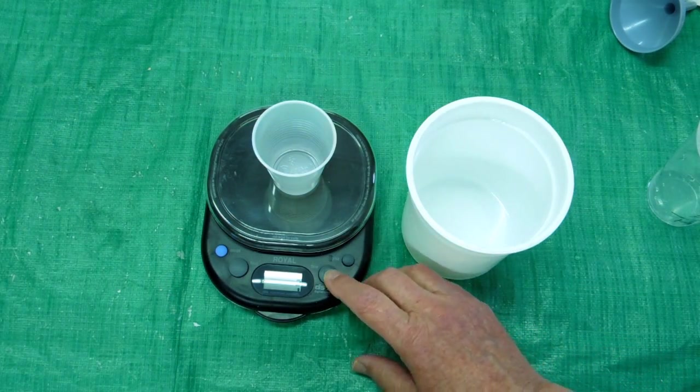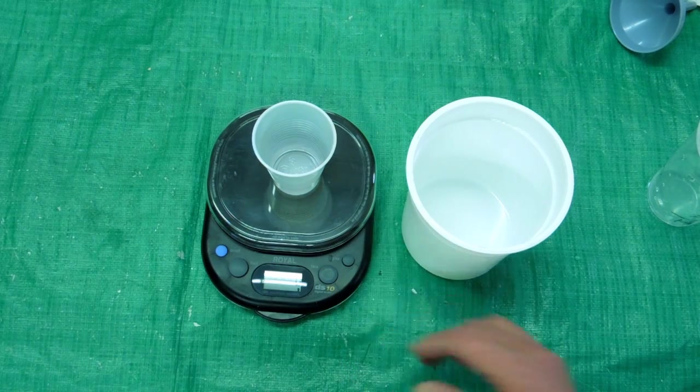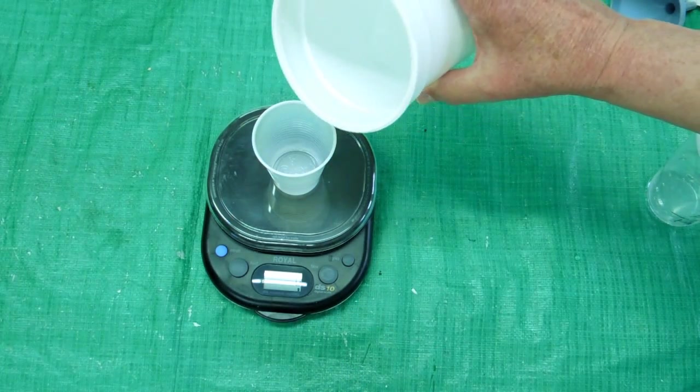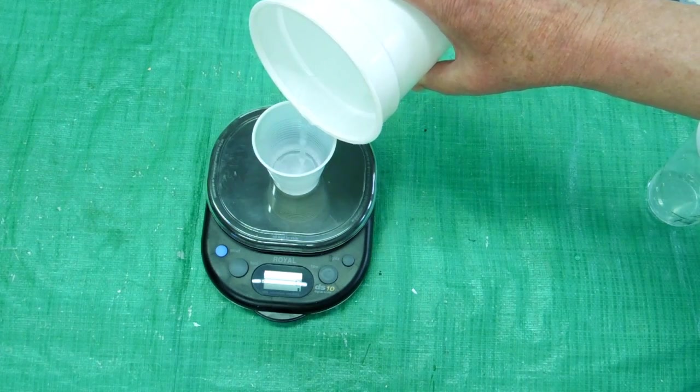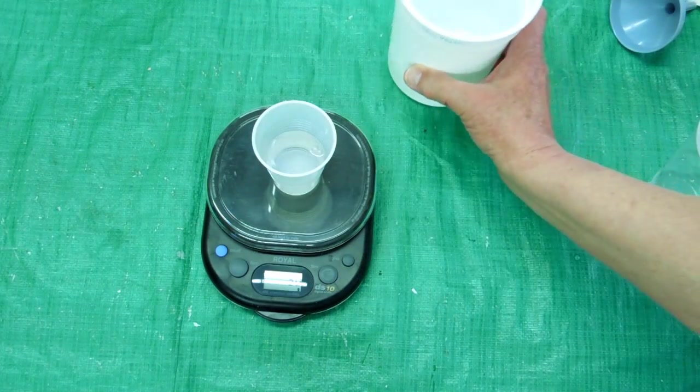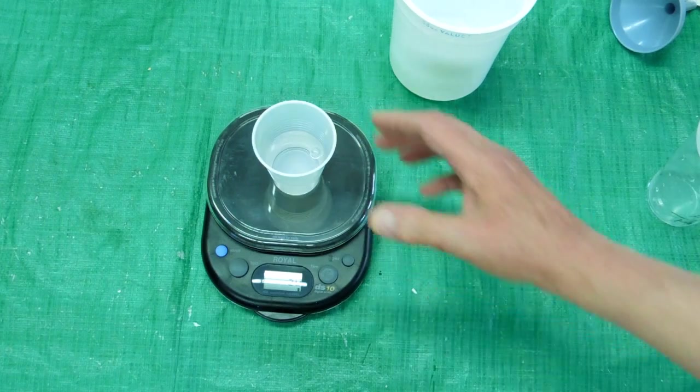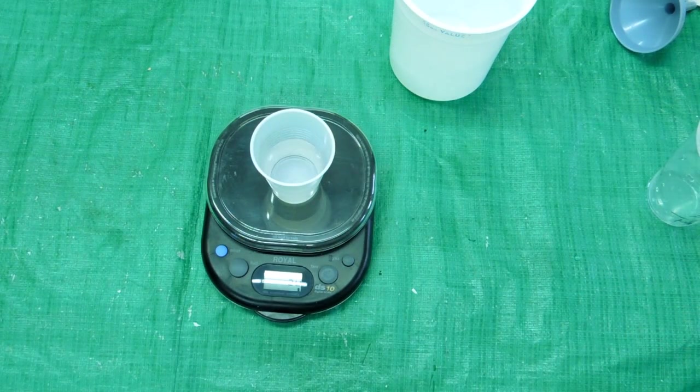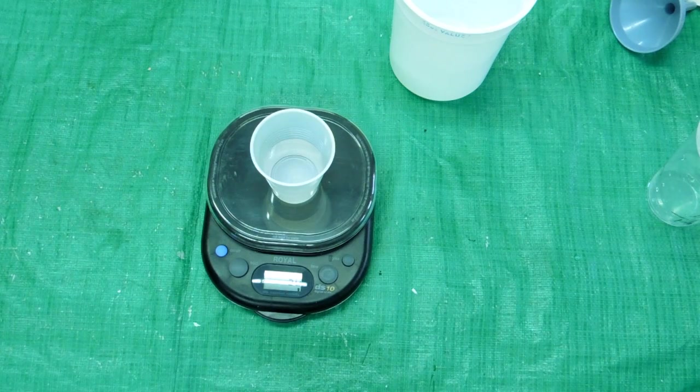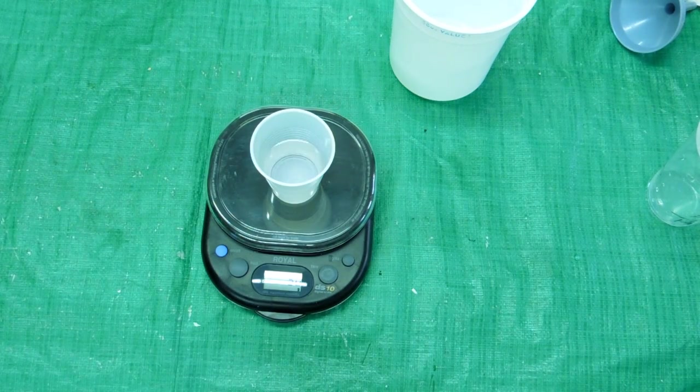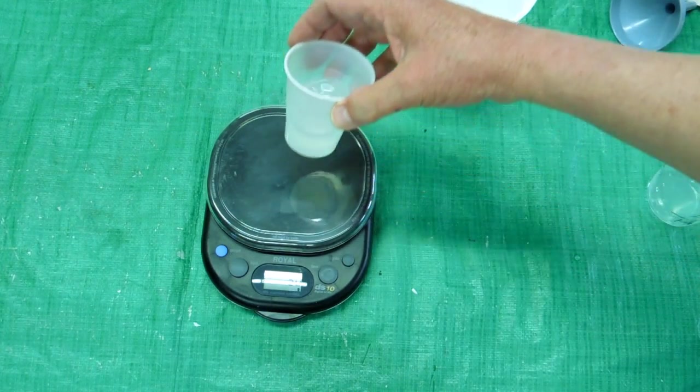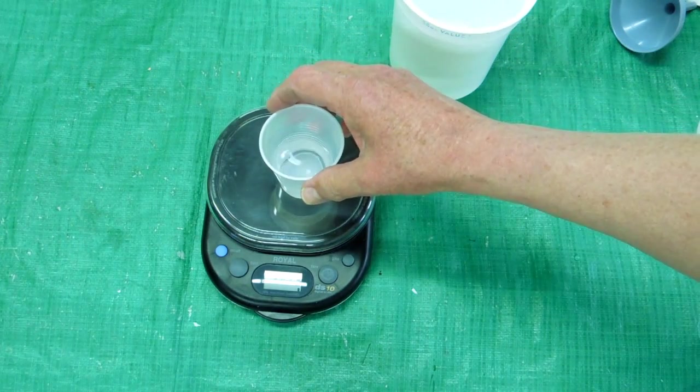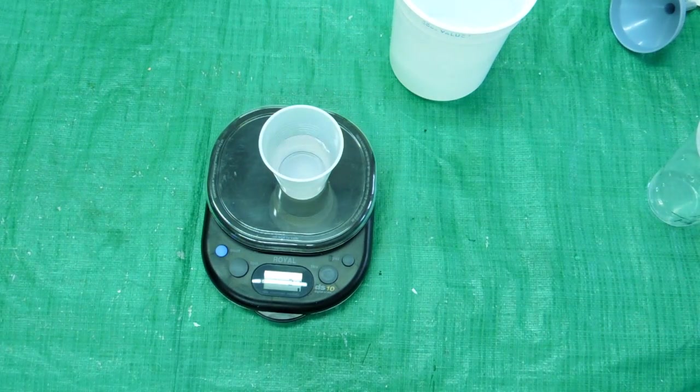Put this small cup on here, tare it out. That ends up being 50 grams. If that was pure water, that would be 50 cc's. So I know I need to mix up that much silicone, plus maybe 10% more. That should be sufficient to fill that mold.